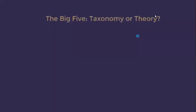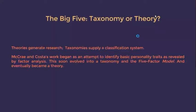So is the Big Five a taxonomy or a theory? Theorists generate research and can both predict and explain, while taxonomies supply a classification system and are essential starting points for the advance of science. McCrae and Costa's work began as an attempt to identify basic personality traits through factor analysis, soon evolved into a taxonomy and a five-factor model, and eventually became a theory.